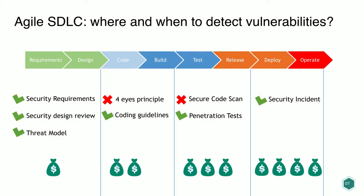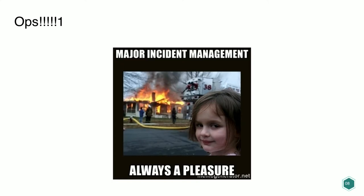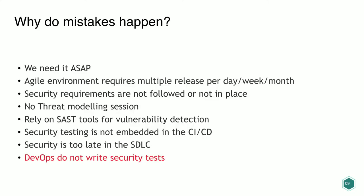If you detect a vulnerability in production, it's too expensive. Mistakes happen because developers have pressure to ship features and products as soon as possible. Security requirements may not be followed, enforced, or even in place. There's no threat modeling session done before deployment, and we still rely on SAST tools with a lot of false positives.